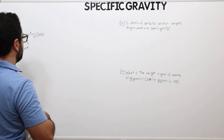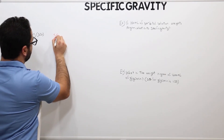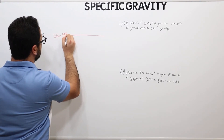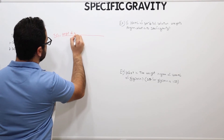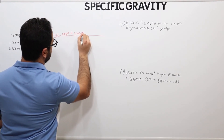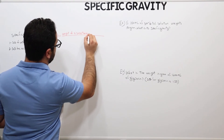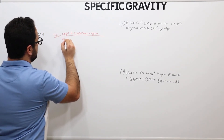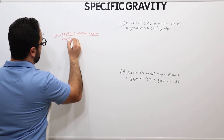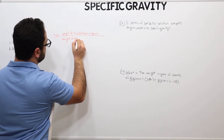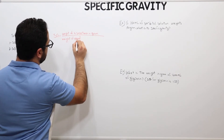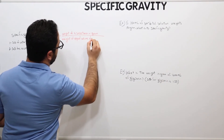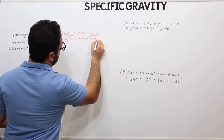The formula for specific gravity is the weight of a substance in grams over the weight of an equal volume of water in grams.